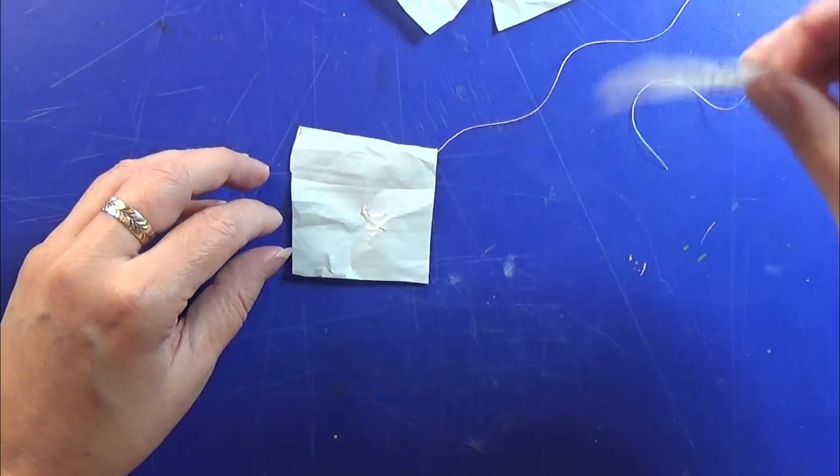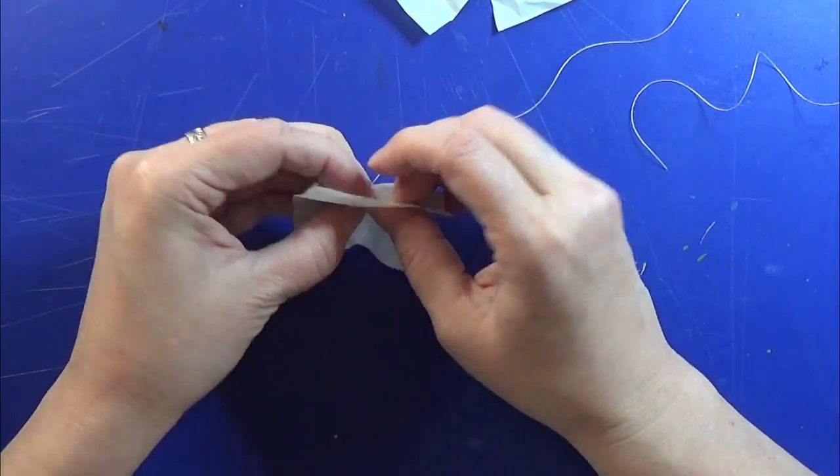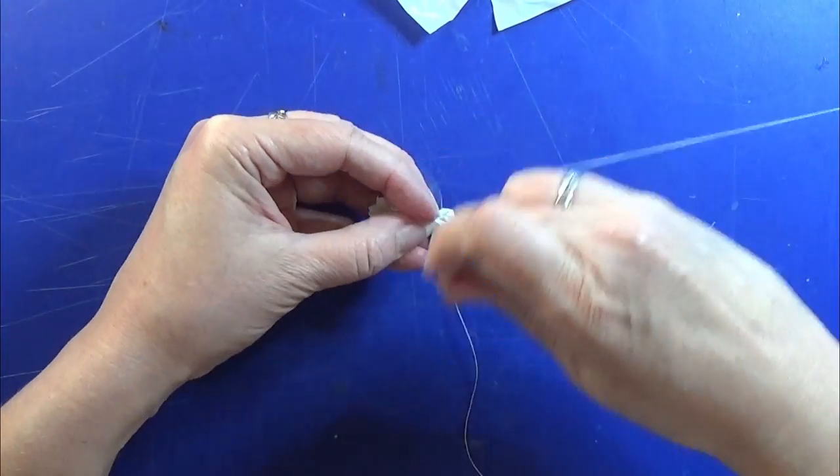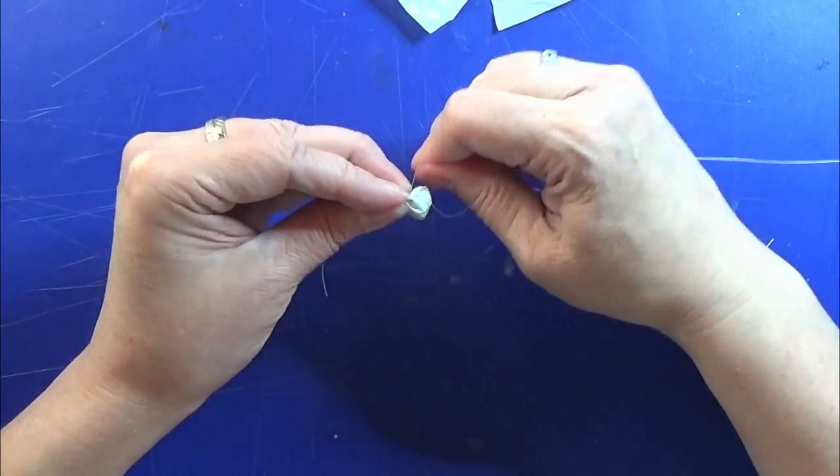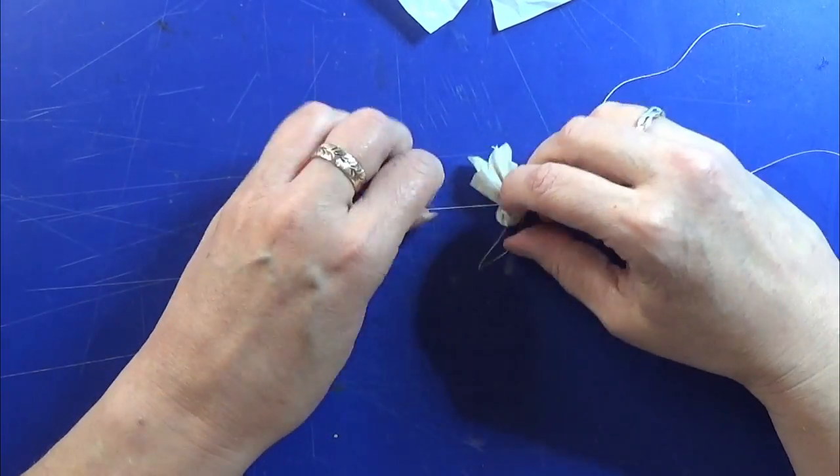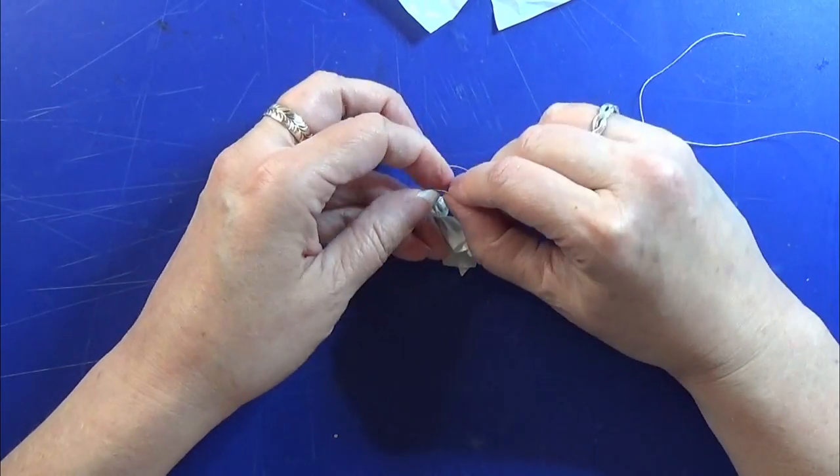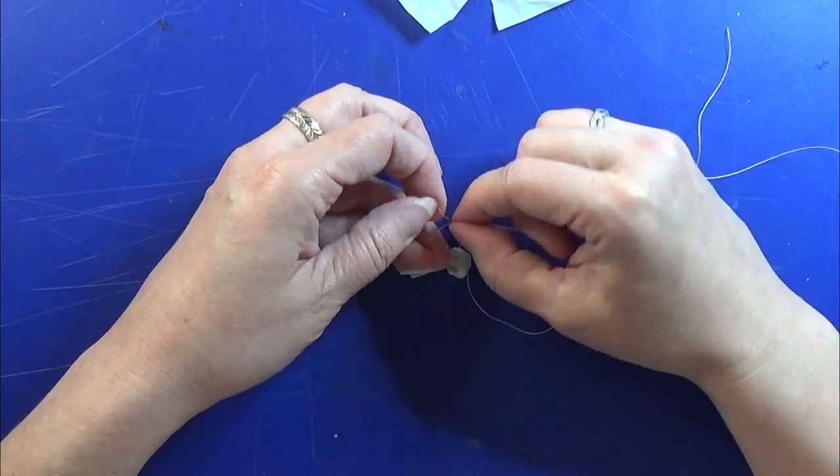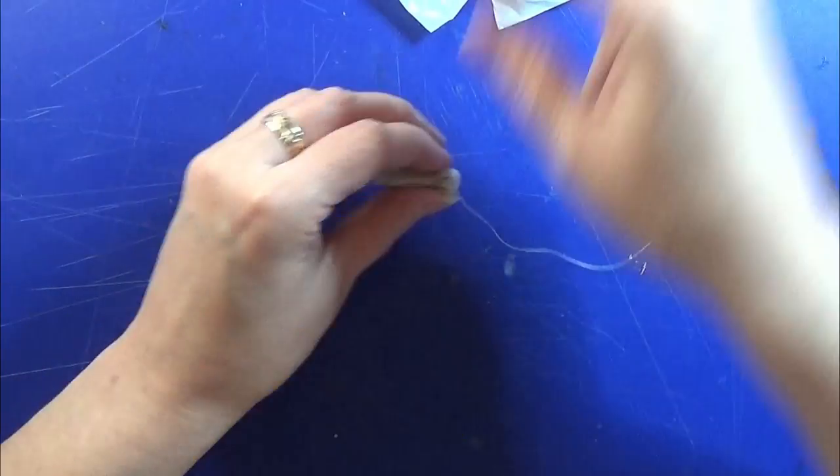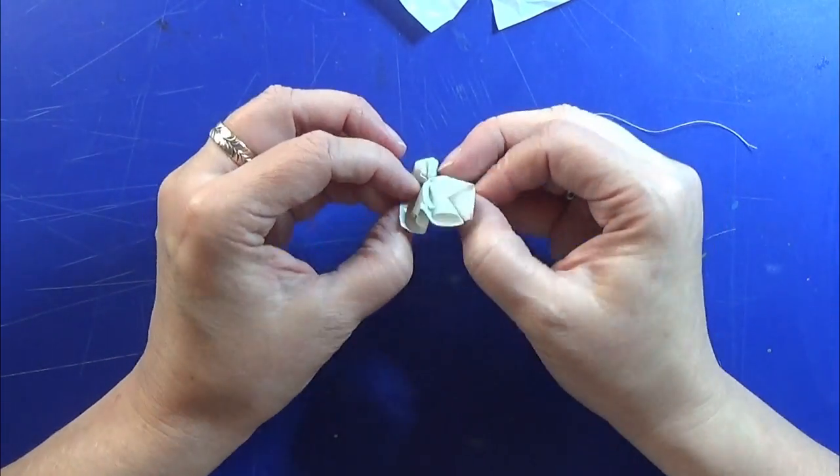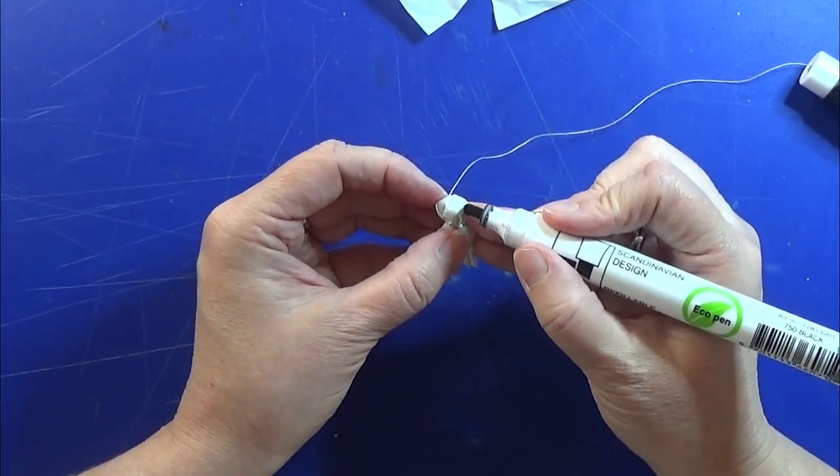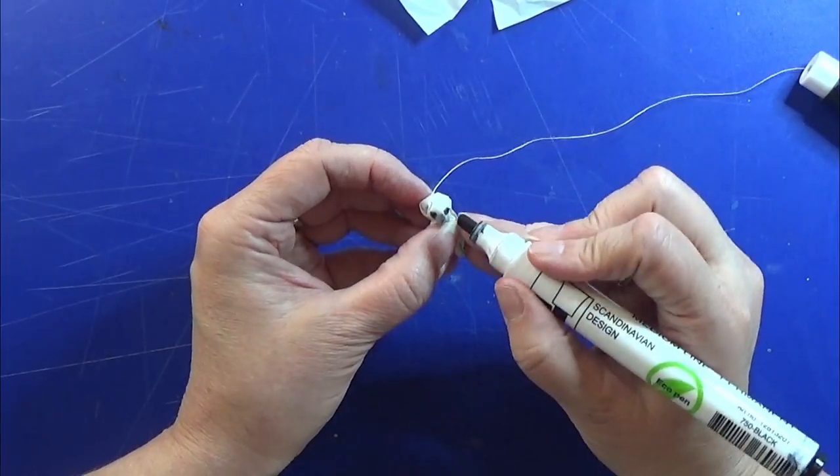I took another square of the plastic bag and I curled it up and placed it into the middle of this. Taking another piece of my sewing thread and winding that around the connection here and making some very good knots. Cutting off the excess thread and I am using a black permanent marker for making the eyes on this little ghost. And that is the ghost. And I made a few of these.